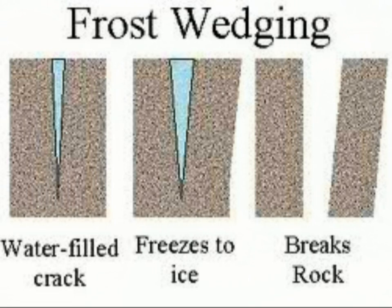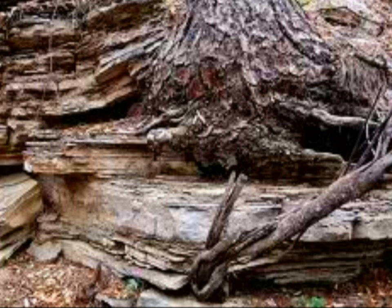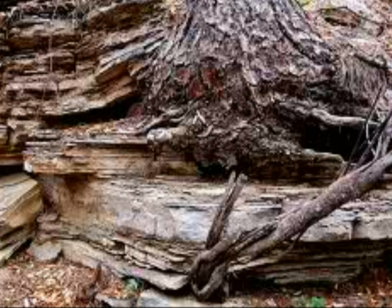Ice wedging happens when solid ground breaks and that certain space will be filled with water and freezes. The water will become ice and eventually make the ground break into two. Sometimes the frozen water is replaced by roots of a plant, and that is what we call root wedging.